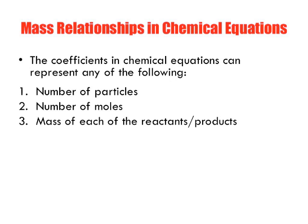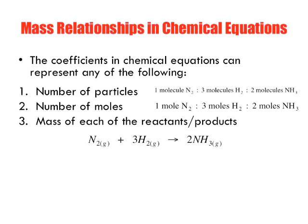If we have the following equation, N2 plus 3H2 produces 2NH3, we have one molecule to three molecules to two molecules. We have one mole to three moles to two moles. But now, mass of each one of the reactants.